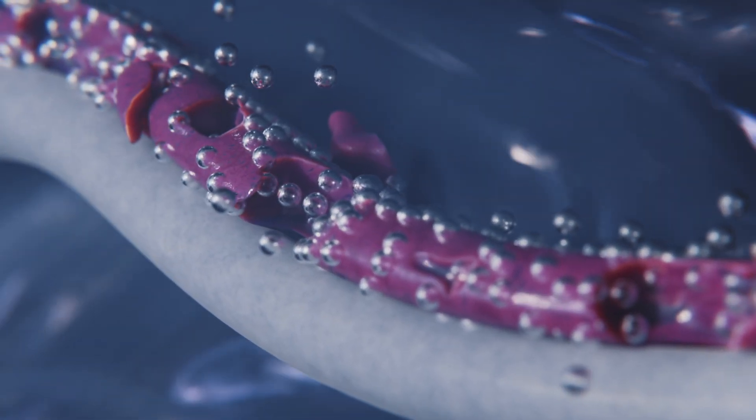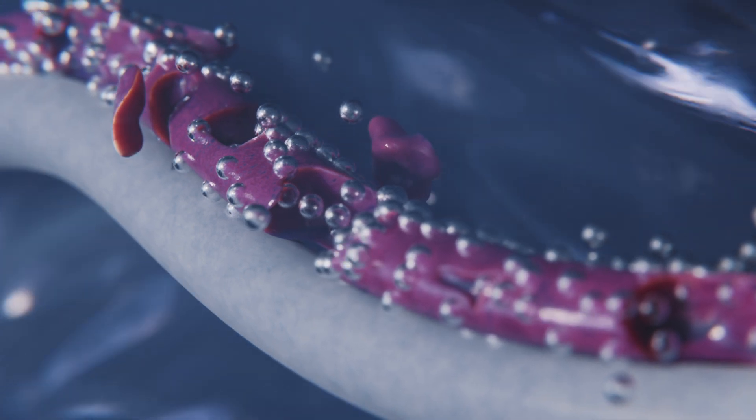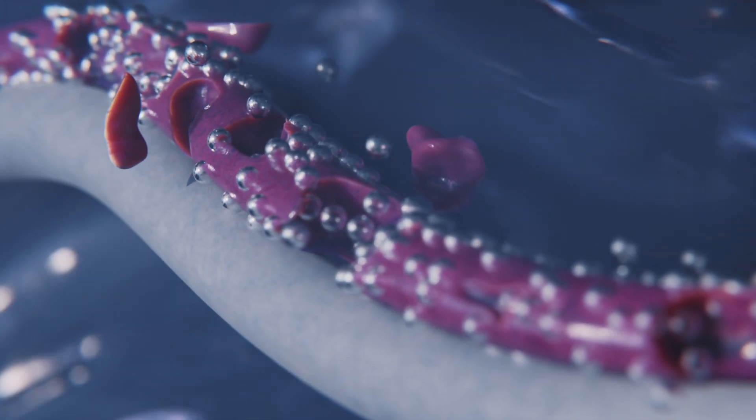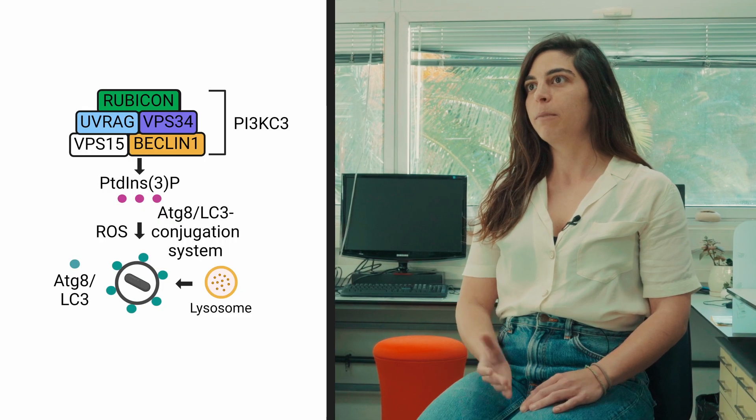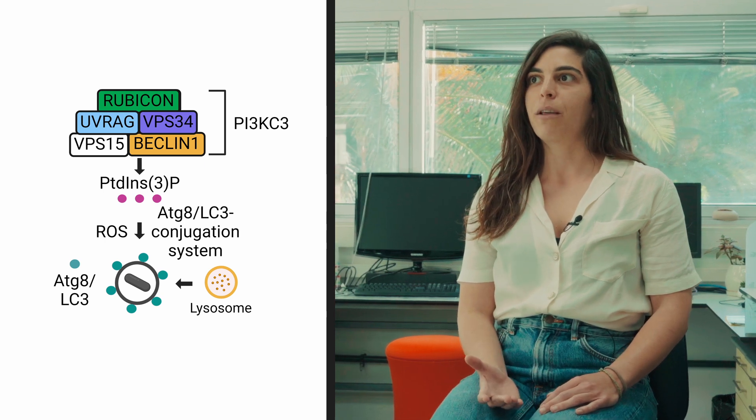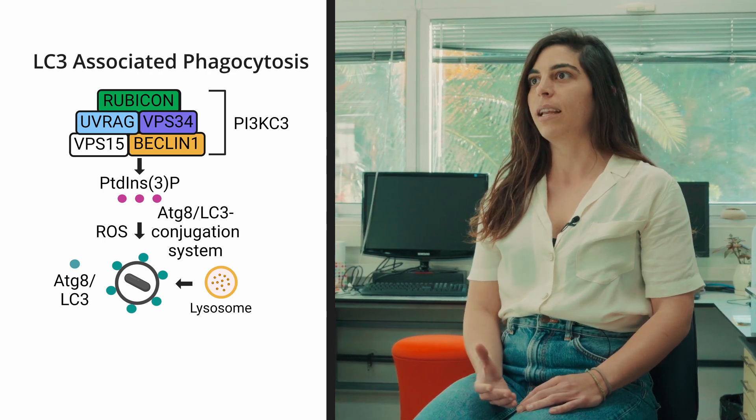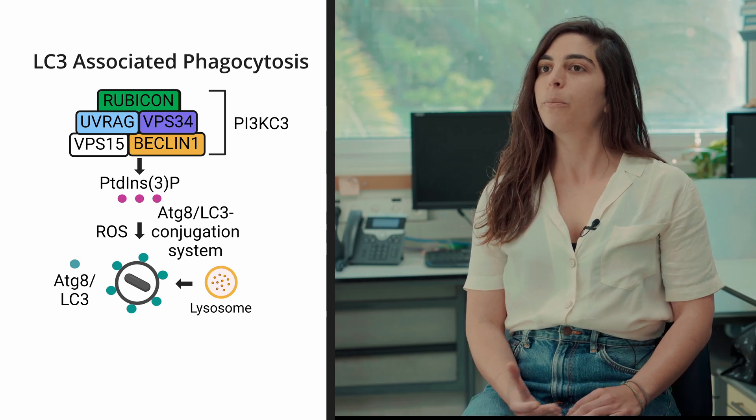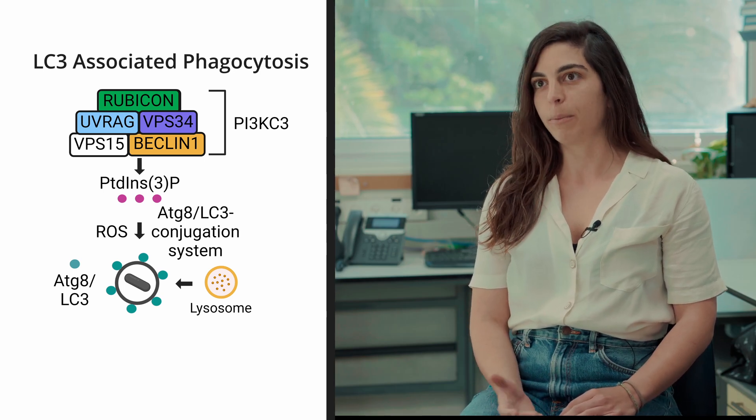When the researchers explored the nature of this structure, they found a surprising clue to its function. We observed that the vesicular sheath is covered with a protein called Rubicon. This was very surprising because Rubicon is mostly known for its role in innate immune responses against invading microbes. This led us to explore the complete pathway, which we now know is very similar to a known pathway called LC3-associated phagocytosis, which the egg repurposes here to destroy the paternal mitochondria.